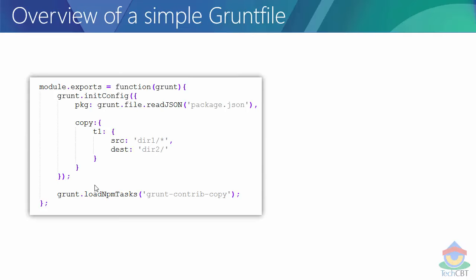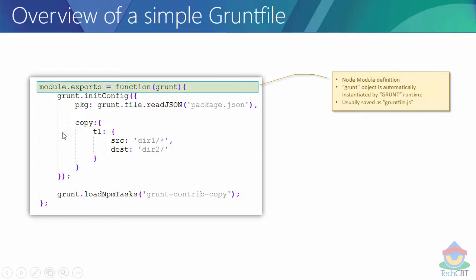Let's understand how gruntfile.js looks - a simple one. This is a Node module, so whatever you develop as part of gruntfile.js follows the module pattern according to Node.js standards. The grunt object is automatically instantiated by the Grunt runtime - it is already available by the time your script is supposed to be executed. Usually this whole script is saved with the file name gruntfile.js, but you can change the file name if you want.